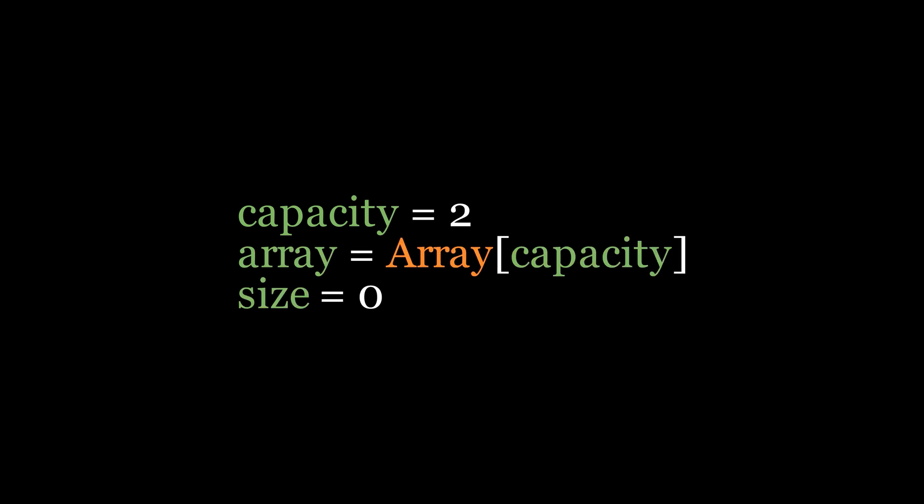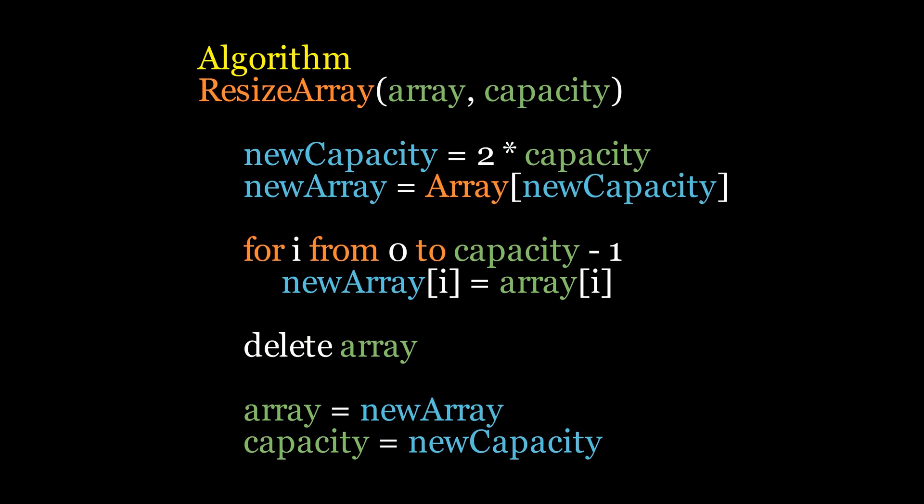Now let's see the pseudocode for this dynamic array resizing. First, we start by initializing the array with a capacity of 2 in our example, and setting the size to 0, which will increase as new elements are inserted. Now the resizing function takes the current array and its capacity as input parameters. First, it calculates a new capacity, which is twice the size of the older one. Then it creates a new array with this new capacity. Next, it copies all the elements from the old array to the new array, which requires linear time relative to the number of elements. After copying, the old array is deleted to free up the memory. And finally, the reference to the array is updated to point to the new array, and the capacity is updated to the new capacity.